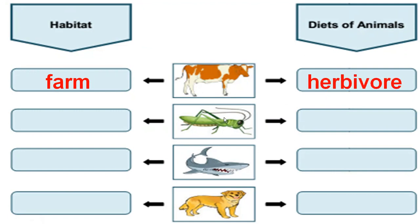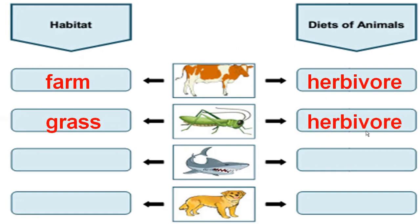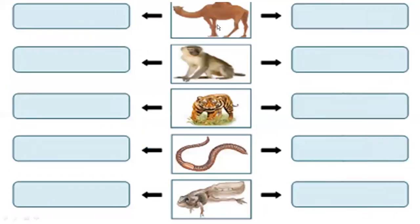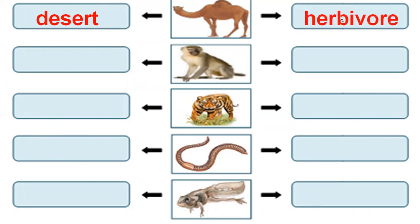Cow is a herbivore. Next, grasshopper — habitat is grass, and the types of food they eat: herbivore. Shark — habitat is sea water, and the types of food they eat: carnivore. Dog — habitat is house, and the diet: omnivore. Camel — habitat is desert, and the food they eat: herbivore.